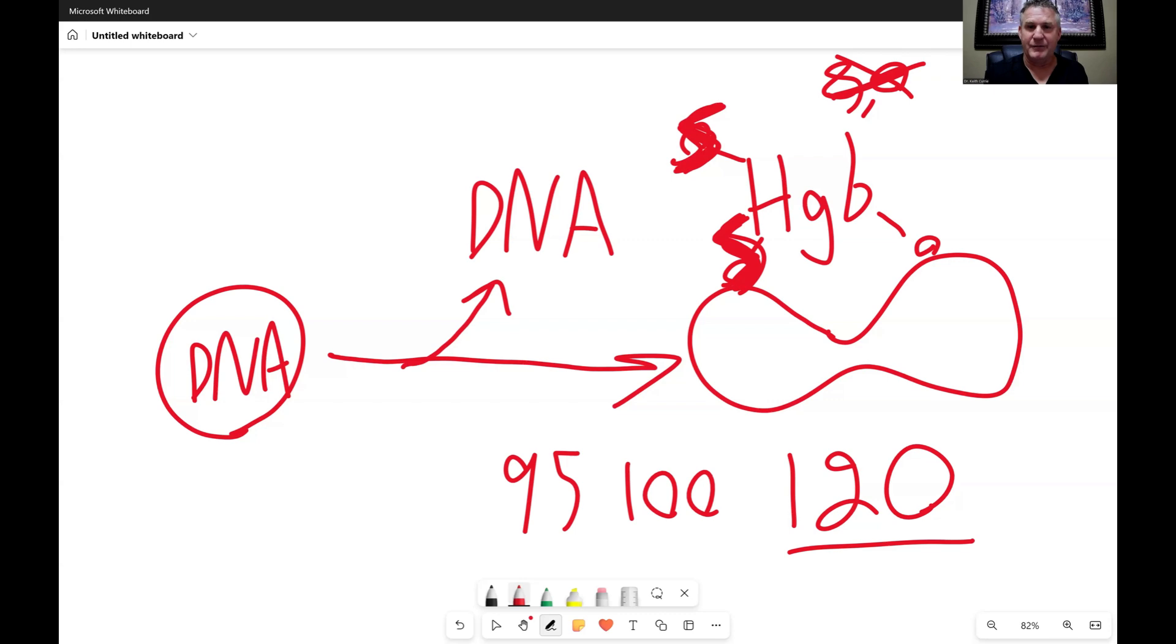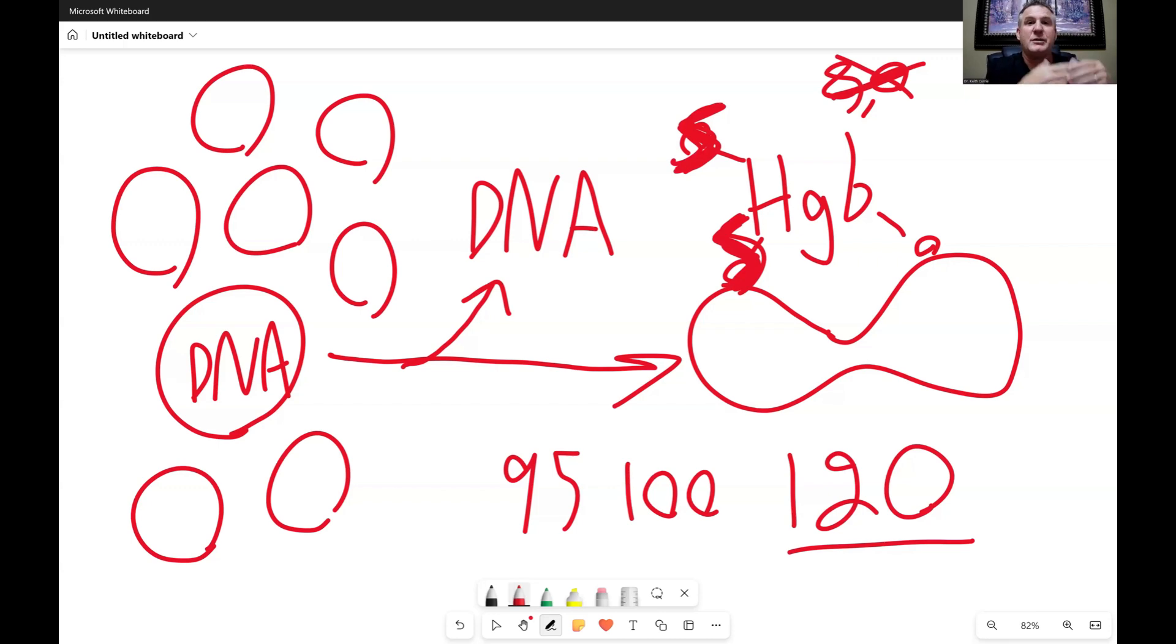Then what happens is that your red bone marrow in your bones will actually start producing more reticulocytes, baby red blood cells. And all those baby red blood cells are shaped like circles and they have DNA in them and they can't carry oxygen like the mature red blood cells can. So when you have a lot of baby red blood cells and have reticulocytosis, which is a very high number of those baby red blood cells, then that directly explains why you're not going to feel good because you have to have the mature red blood cells.